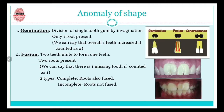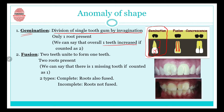Next comes anomaly of shape, where the shape of a person's teeth is changed. First is gemination — what happens in gemination is there is division of a single tooth germ by invagination. We have one root, but the crown portion shows a division. It looks like there are two teeth but it is just a single tooth, so overall there is one extra tooth when counted.